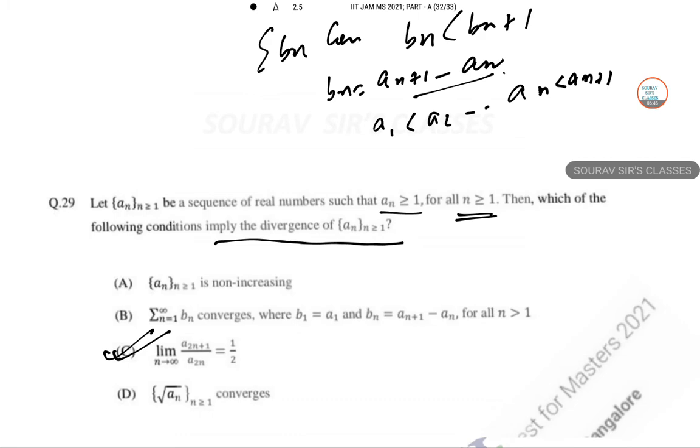For example, if we take 3n plus 4 by 2n minus 3 by n greater than equal to 1, obviously a_1 greater than or equal to a_2 greater than or equal to a_3 dot dot dot. So this sequence is actually non-increasing, this is a convergent structure. So the non-increasing, the divergence structure is applicable. So this proves option A wrong.